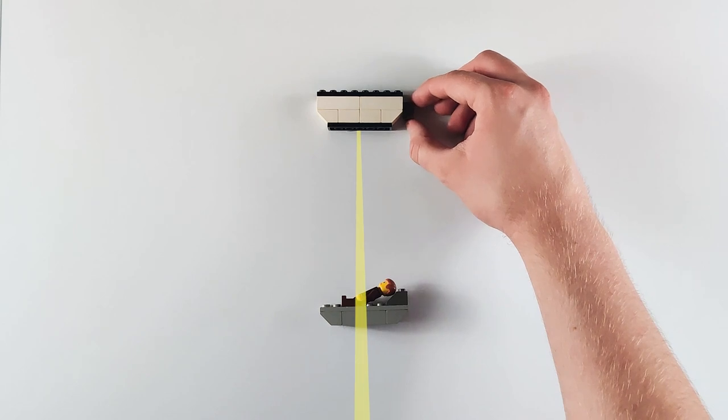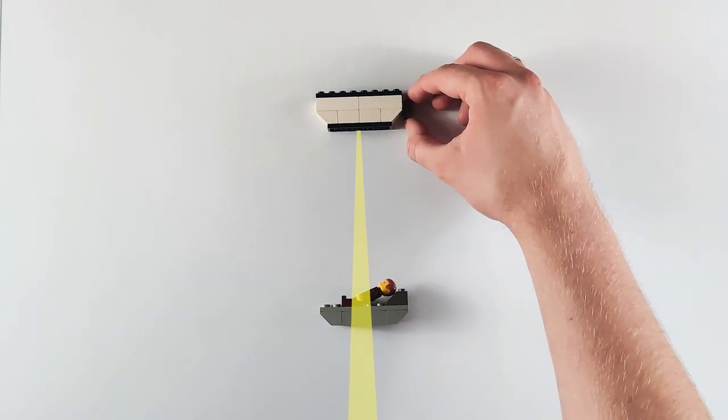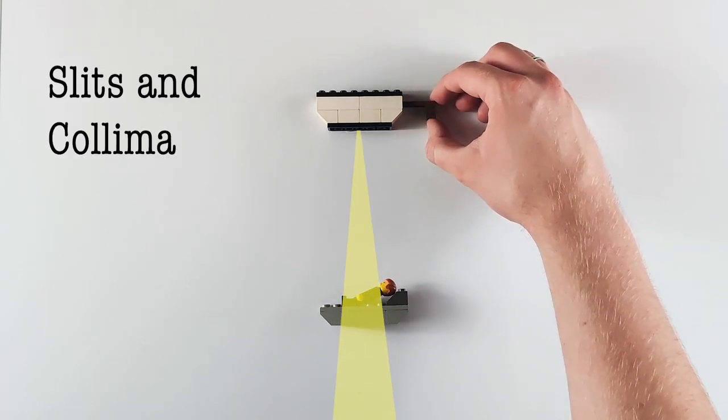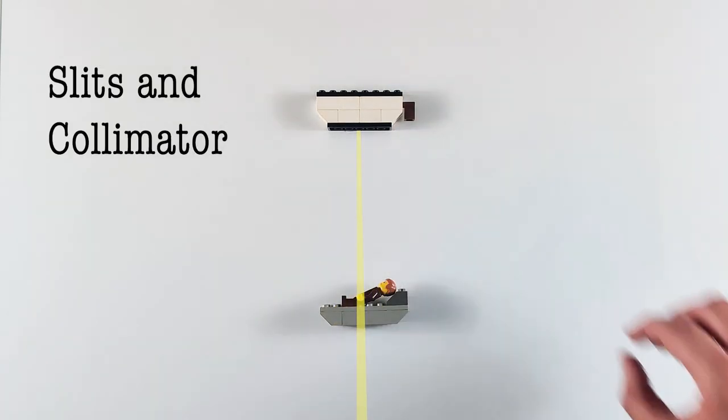First, we can narrow the beam so as to irradiate only the area that needs to be examined. Various slits and more advanced devices called collimators are used for this purpose.